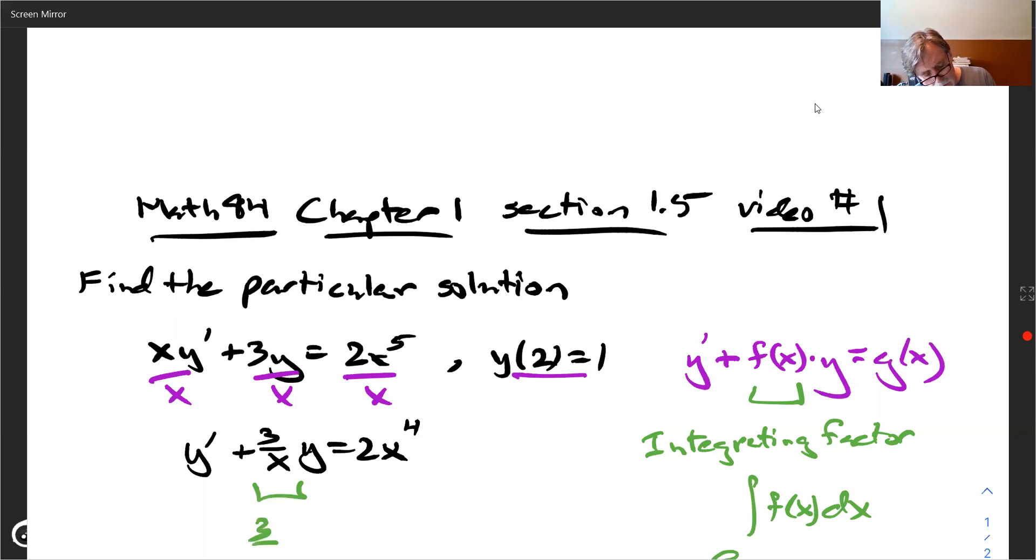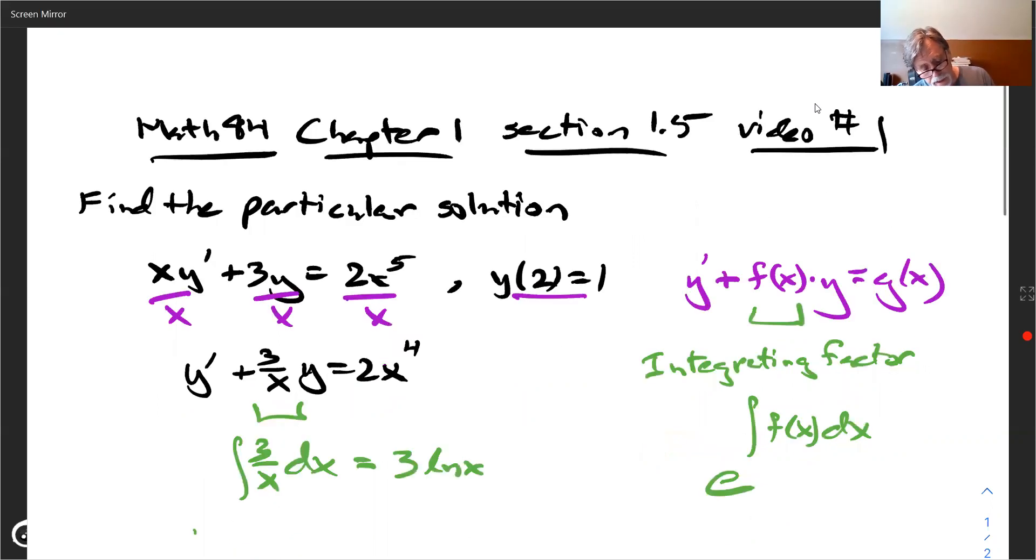as a power of the exponential e. And when we do that for this equation, what we have is we take this guy and we take 3 over x and integrate it with respect to x. And in that case, what we get, by the way, is 3 natural log of x. Don't need the c yet. Okay.